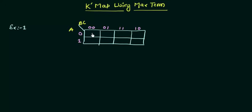So this is the 8-cell K-map given to you and you have to find the function F by using the zeros. Till now what we were doing, we were grouping these ones.